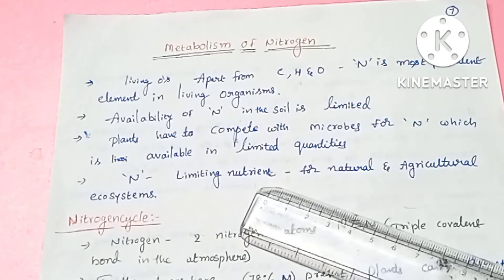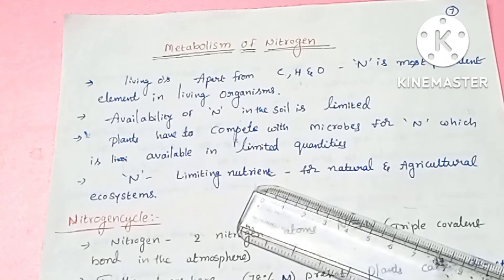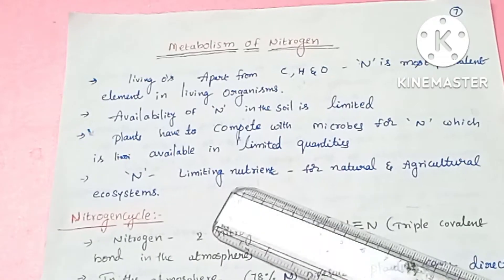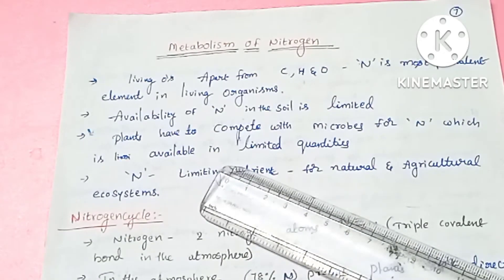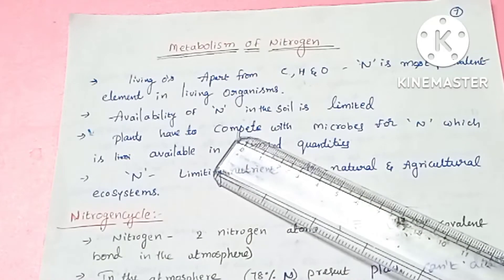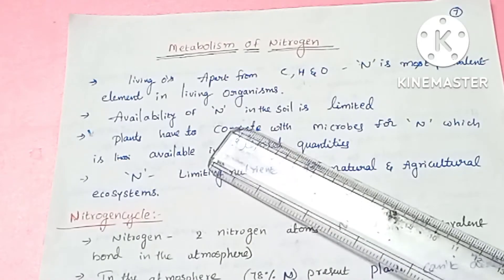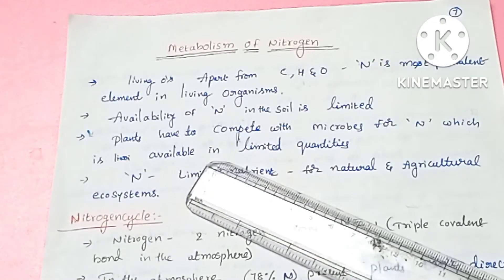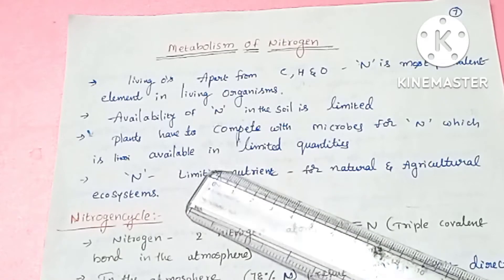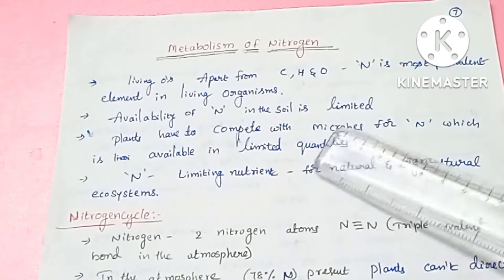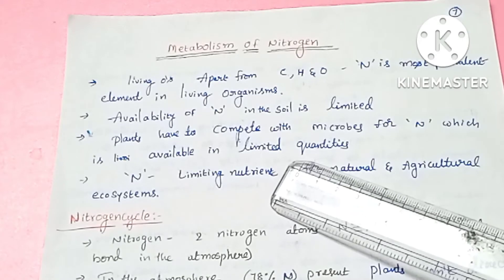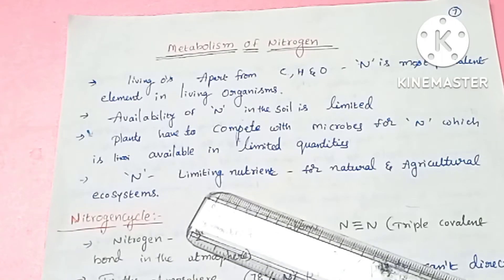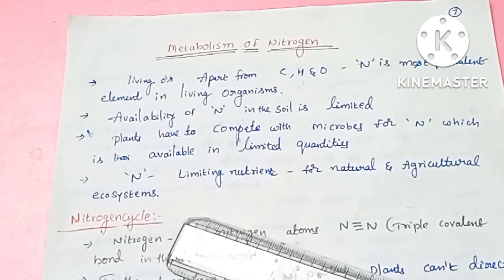Living organisms use carbon, hydrogen, and oxygen. Nitrogen is the most prevalent element in living organisms. However, nitrogen is absorbed in the soil, where it is available in a very limited amount. Plants and microorganisms also absorb nitrogen from the soil. So nitrogen is a limiting nutrient in agriculture and natural ecosystems.